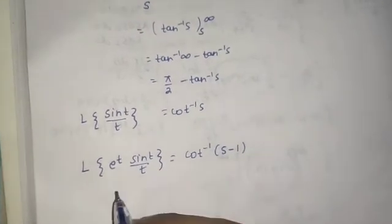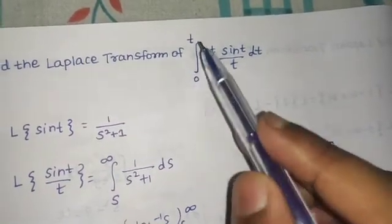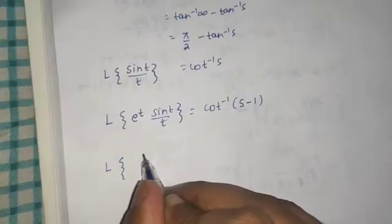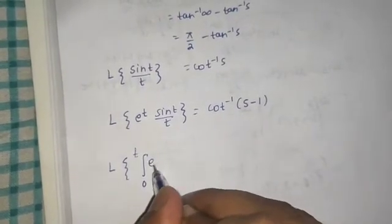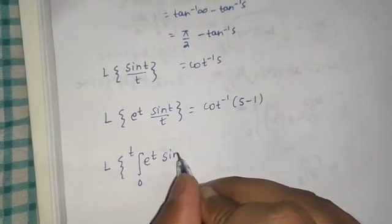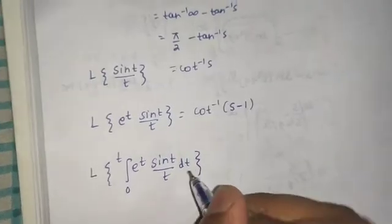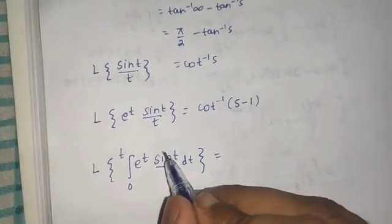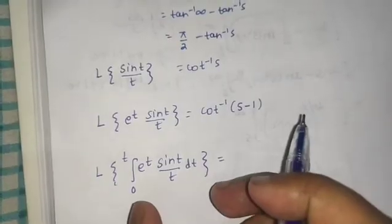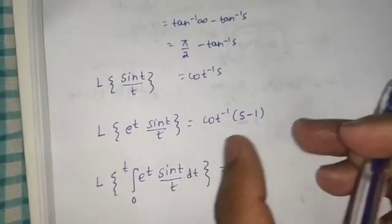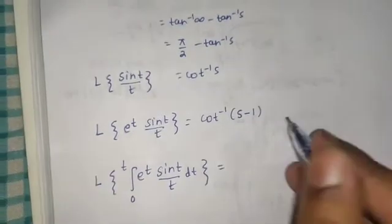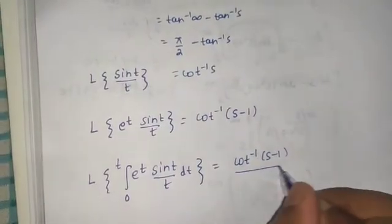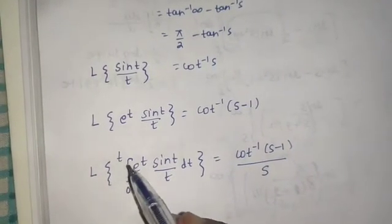Now we have to integrate from 0 to t, so we apply the Laplace of integral property. The Laplace of the integral from 0 to t of e^t · sin(t)/t dt: if we are integrating once, we simply divide by s whatever the Laplace of the integrand is. We already found that to be cot⁻¹(s − 1), so the final answer is cot⁻¹(s − 1) divided by s.